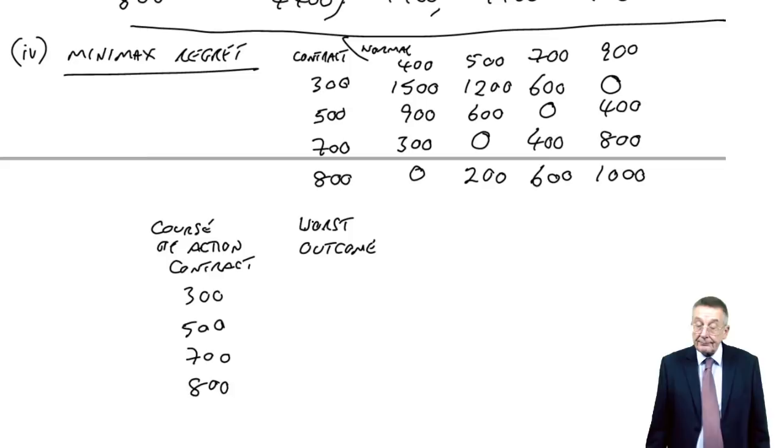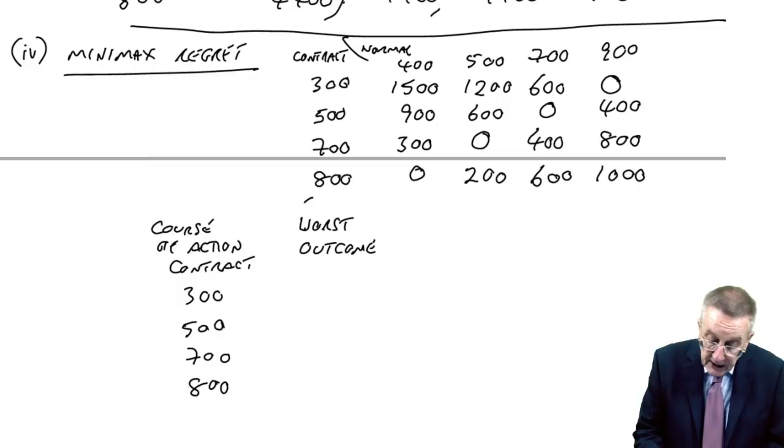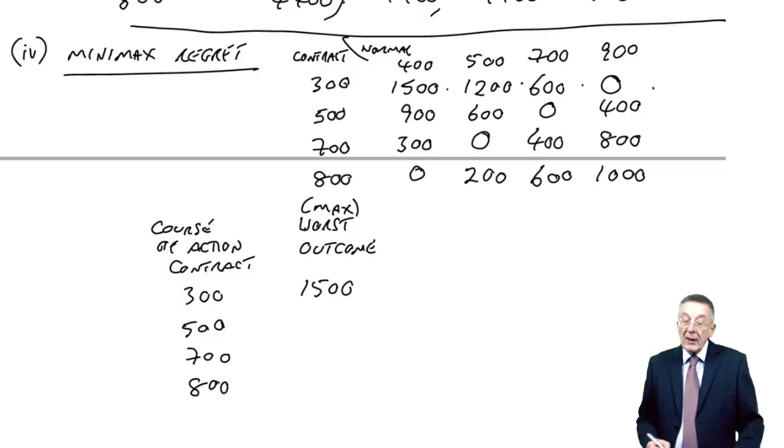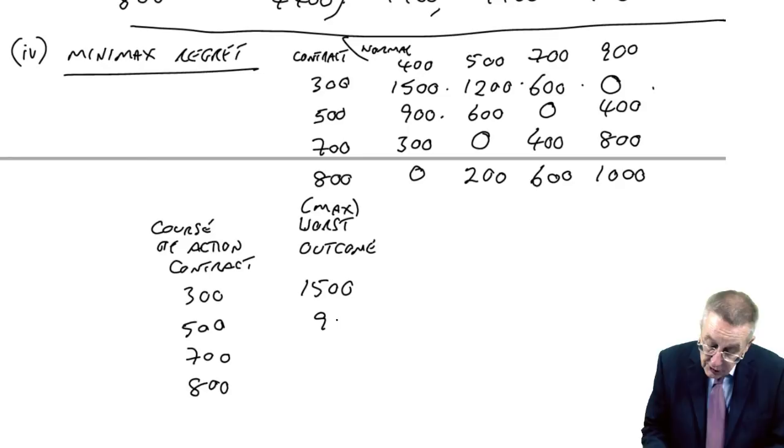So, 300, the regret will either be 1500, 1200, 600, or 0, so 1,500. For 500 contract size, the worst, the biggest, is 900. For 700, the worst, the biggest, is 800. And finally, for 800, the worst is 1,000.